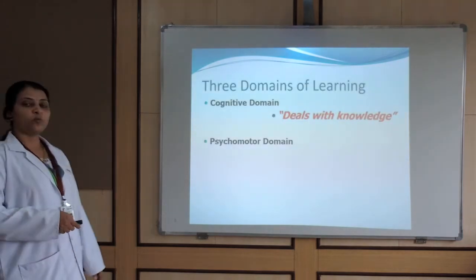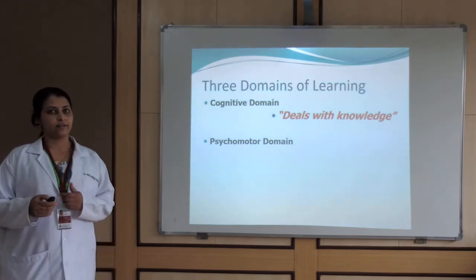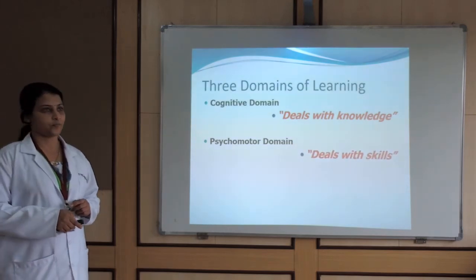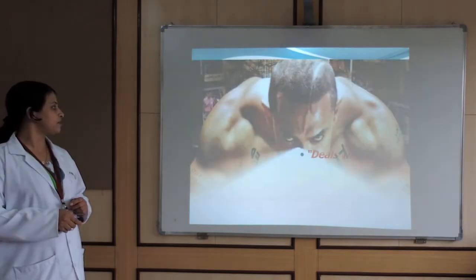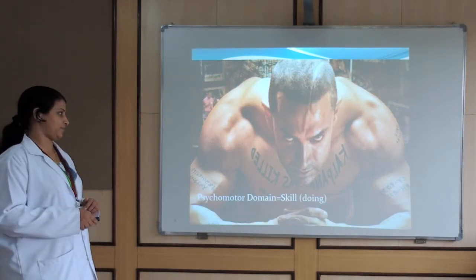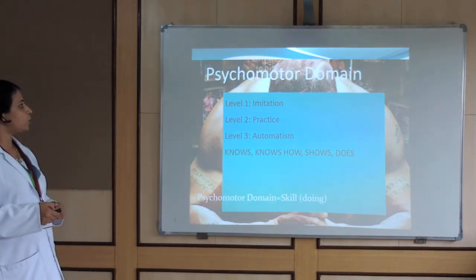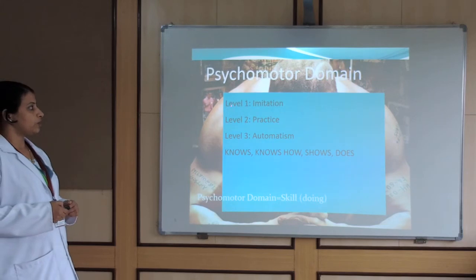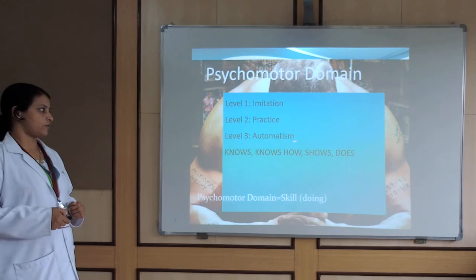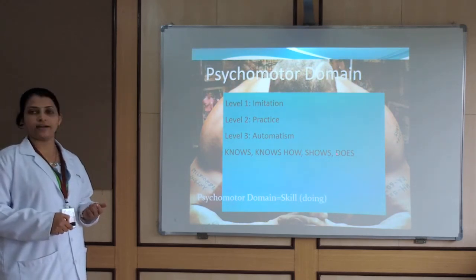The second domain is the psychomotor domain, also called the domain of hand. It deals with skills. The various levels of the psychomotor domain are: Level 1 — imitation, Level 2 — practice, and Level 3 — automatism. This domain deals with 'knows,' 'knows how,' 'shows,' and 'does.'